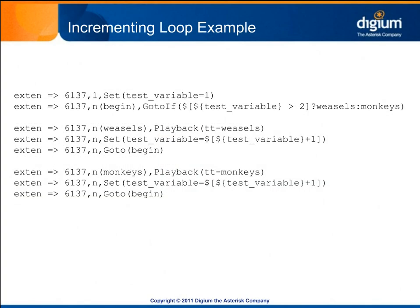We can expand on this by using expressions to increment a variable, as we saw in the previous module, and then create a loop using the GoTo application. You will see that we've added a new label called begin to the priority that invokes the GoToIf application. We've also added lines after each of the other labels setting the value of test variable to one higher than it already was, and using GoTo to jump back to the begin label.